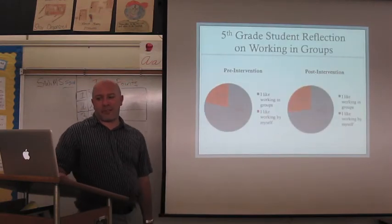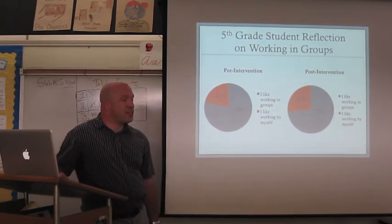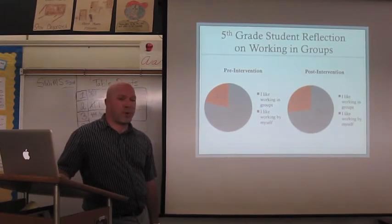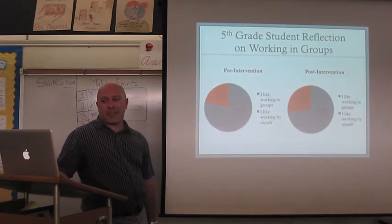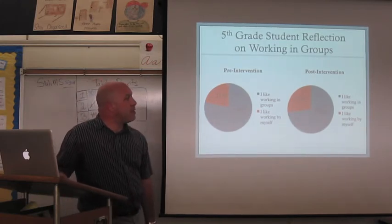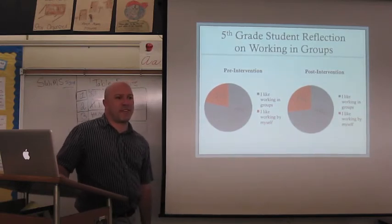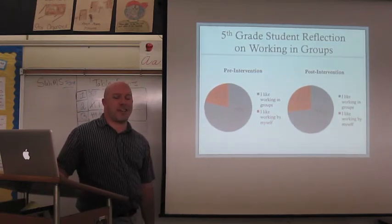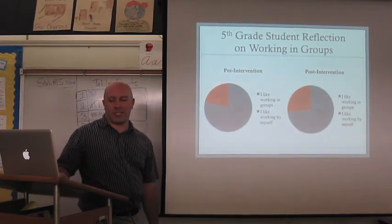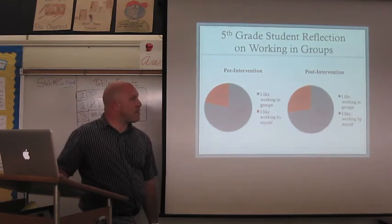I then asked students if they preferred to work in groups or by themselves. Before the intervention, 79% said they prefer working in groups. 21% prefer to work by themselves. After the intervention, that number actually declined to 73% preferring to working groups. And that could be because a lot of the groups might have had one student who distracted them or took away from how the group did. And they felt that maybe they could just do better working by themselves. So that was kind of interesting to see.